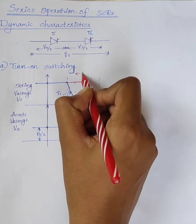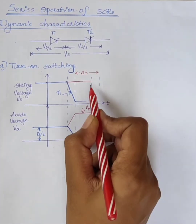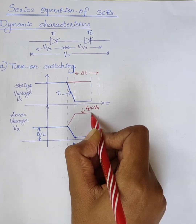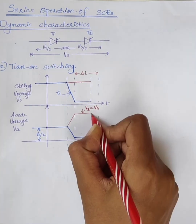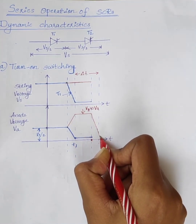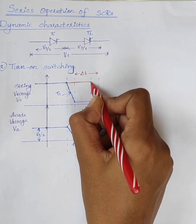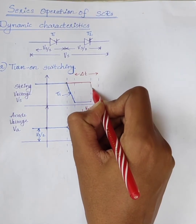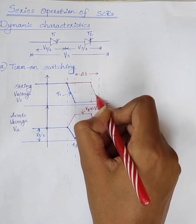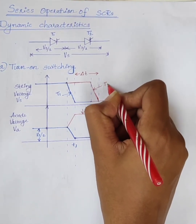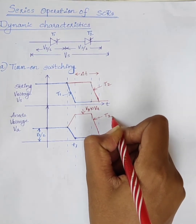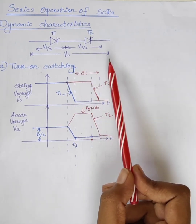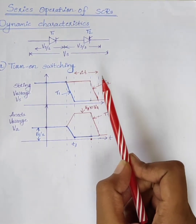After the time interval delta T, thyristor T2 is turned on. When T2 turns on, its voltage drops from Vs to forward voltage drop. When both SCRs are on, the string voltage Vs drops to almost 0. From the turn-on characteristics, it is clear that the voltage shared by the two SCRs is unequal due to the different turn-on time.